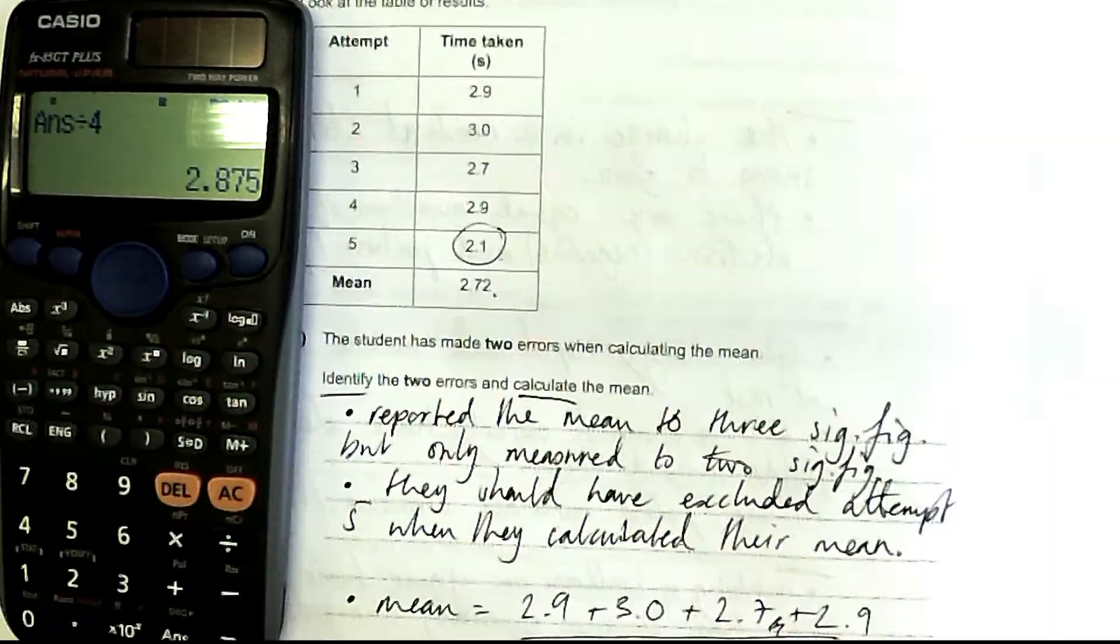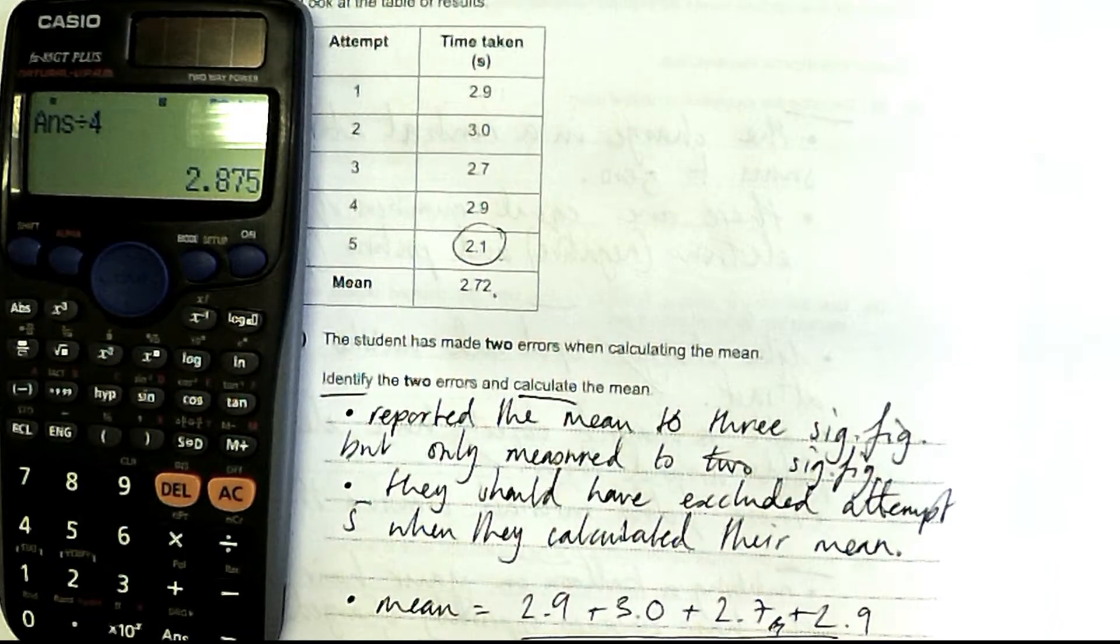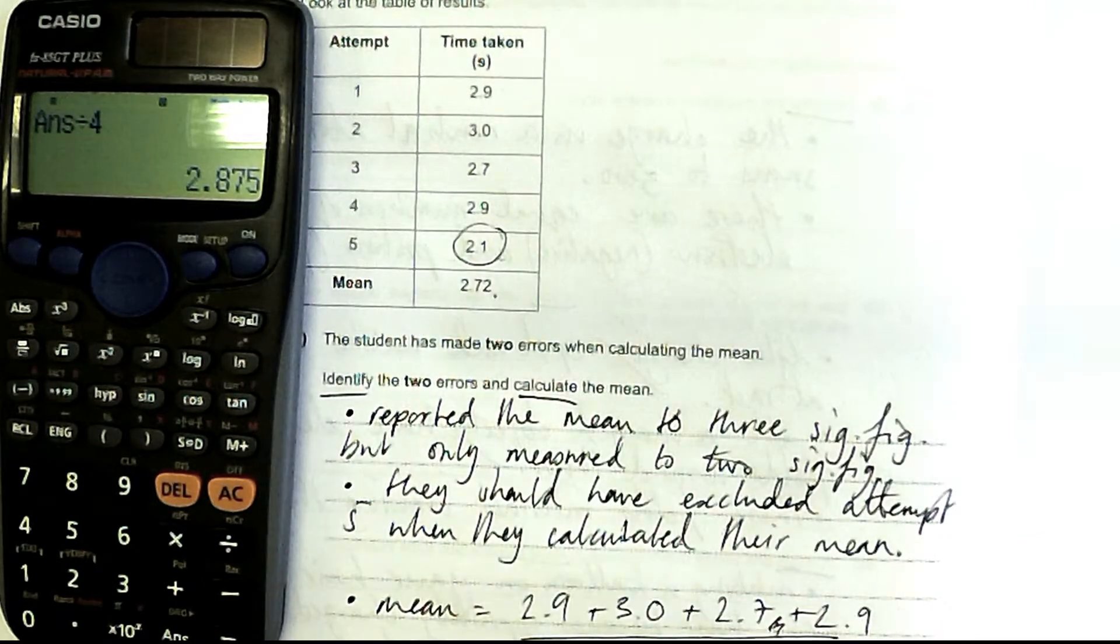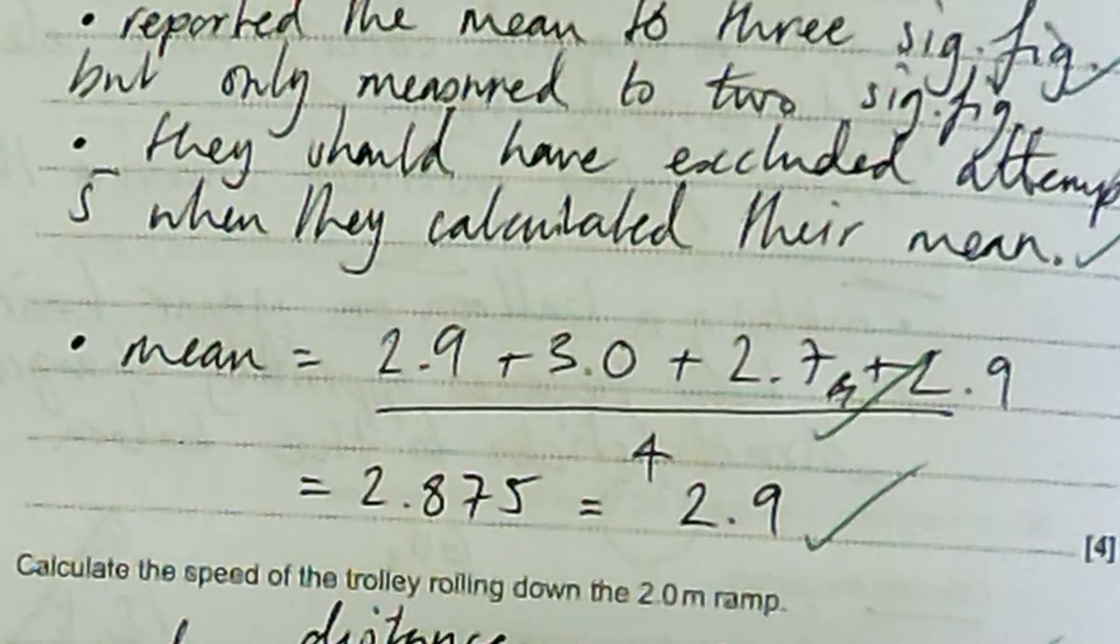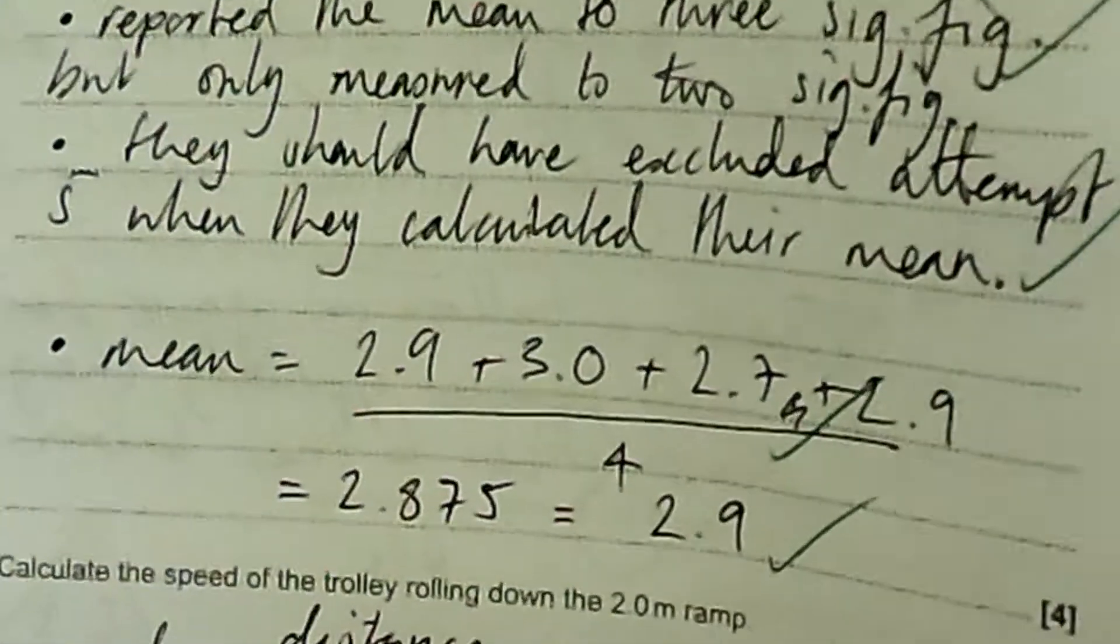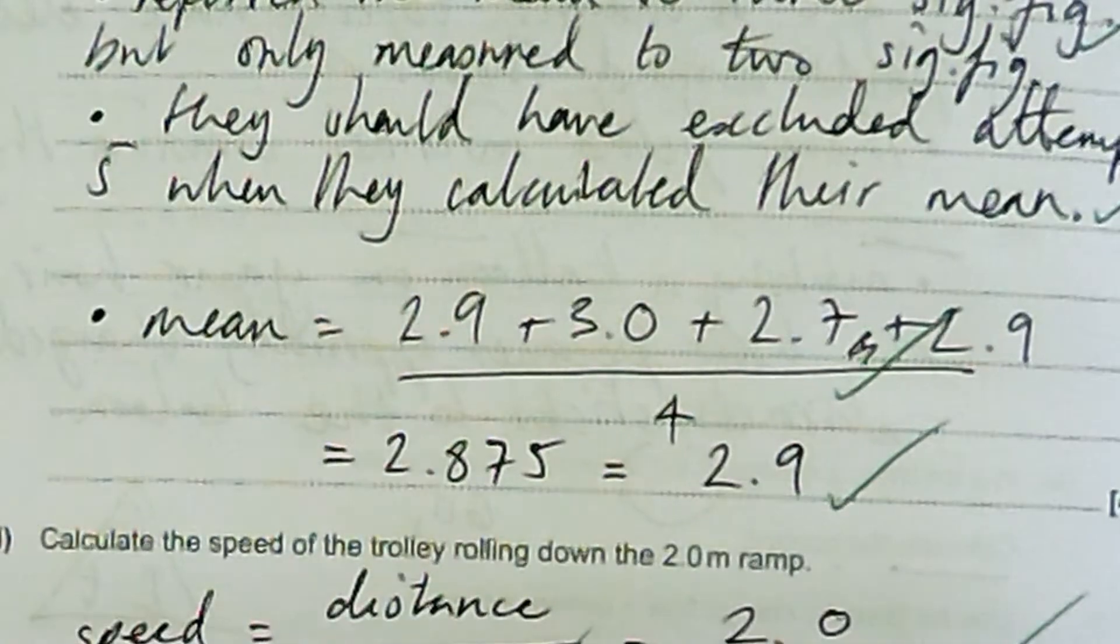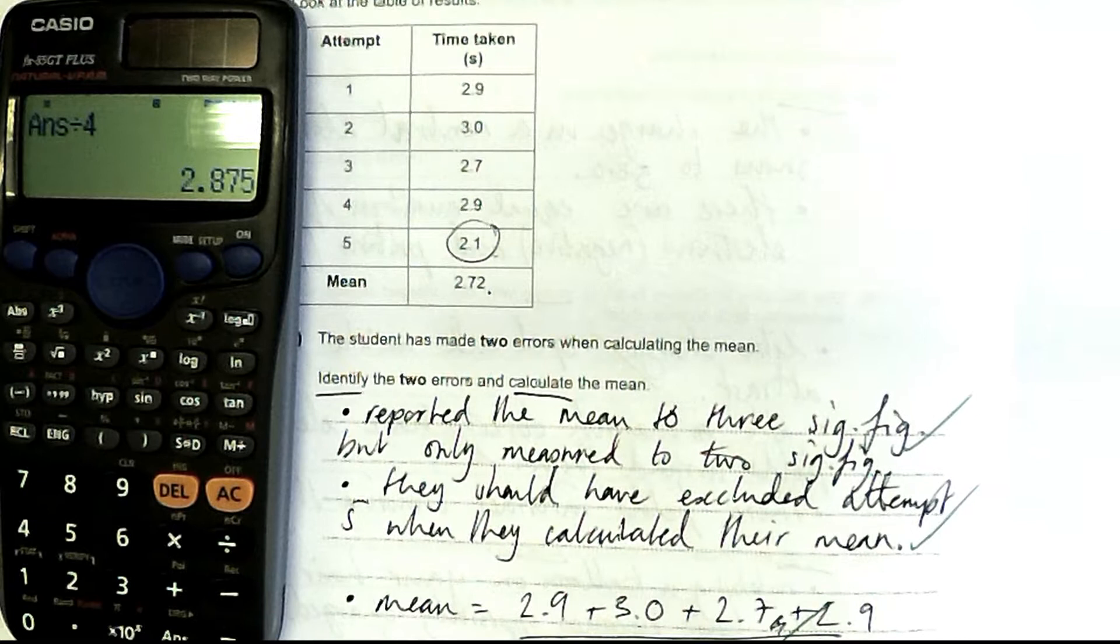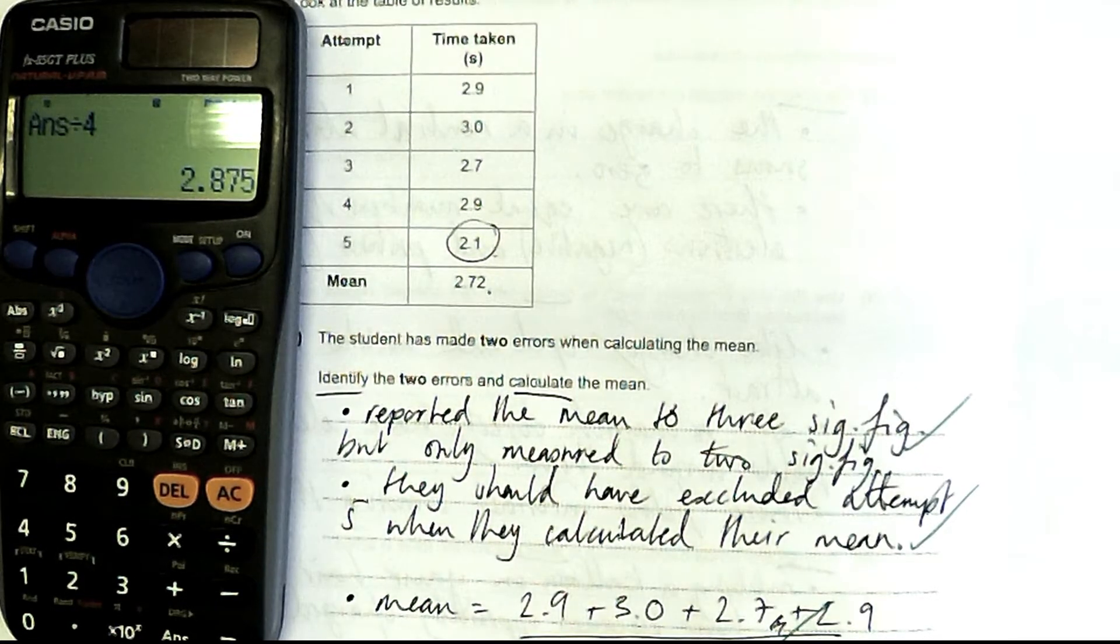And, well, that is 2.875 on the calculator but I am going to round that to just two significant figures. That is 2.9. So I would have only got one mark if I'd have excluded it, okay, but rounding it to the correct number of significant figures. In other words, correcting this error and this error gets me the final two marks.